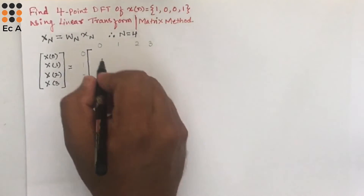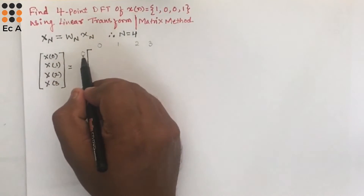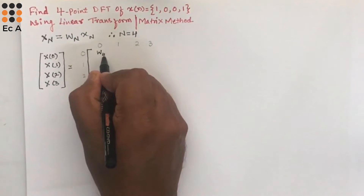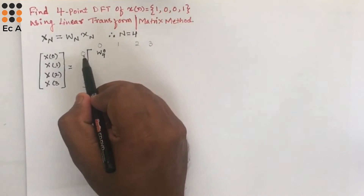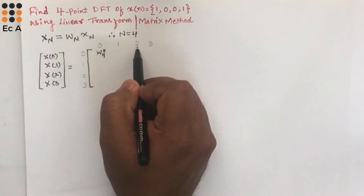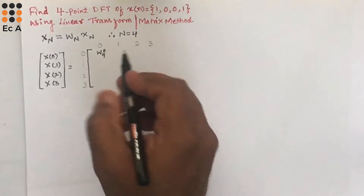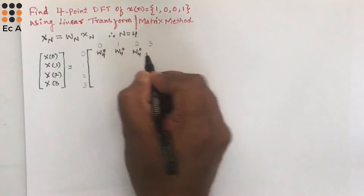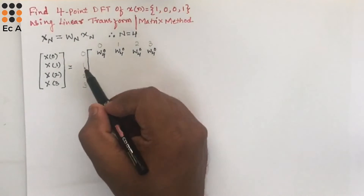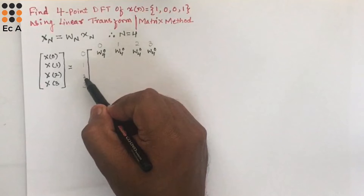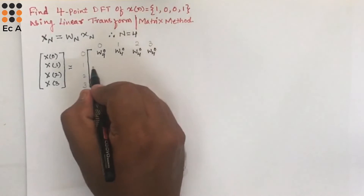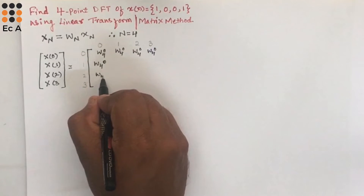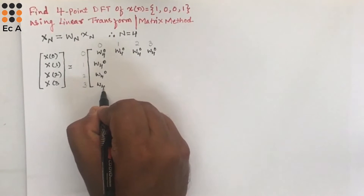Since N=4, we write W4 raised to the product of the row and column indices. So 0×0=0 gives W4^0; 0×1, 0×2, 0×3 all give W4^0. Similarly 1×0, 2×0, 3×0 all give W4^0. Then 1×1=1 gives W4^1, 1×2=2 gives W4^2, 1×3=3 gives W4^3.